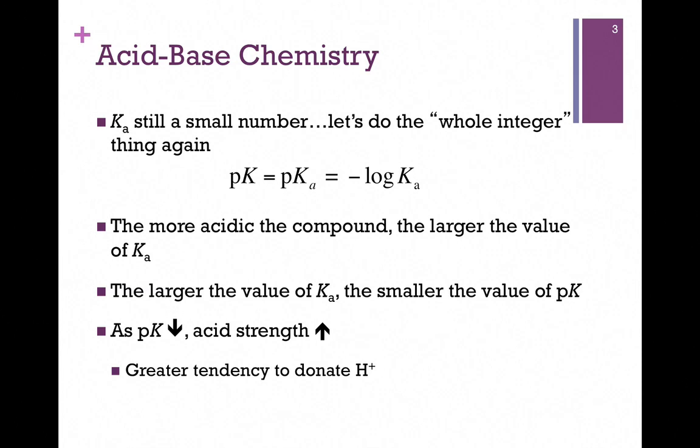Keep in mind what this means. The stronger the acid, the greater the tendency to donate a proton. So if we're comparing separate molecules or separate groups that can either accept or donate protons, as the pKa value of the individual groups decrease, it means that group is more likely to donate its proton - it will donate its proton before one with a higher pKa value.